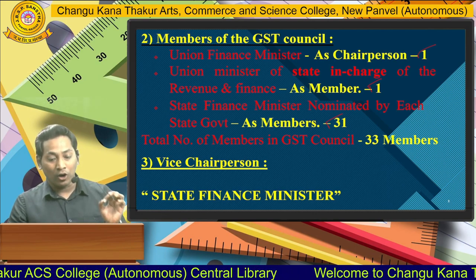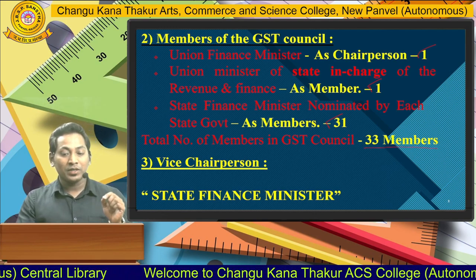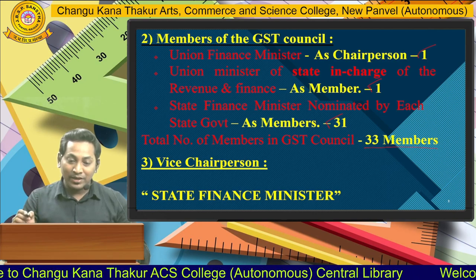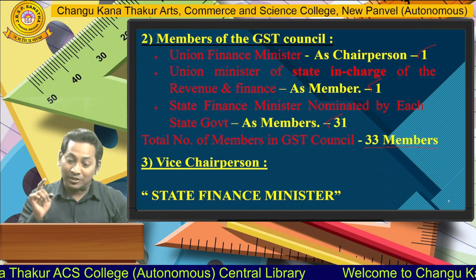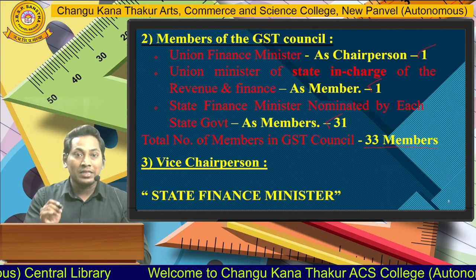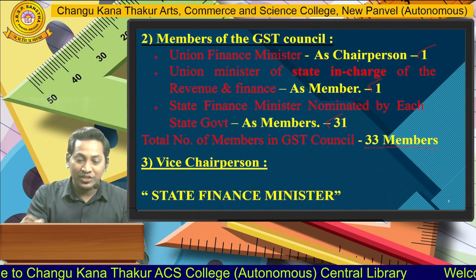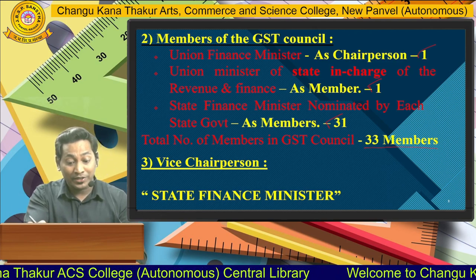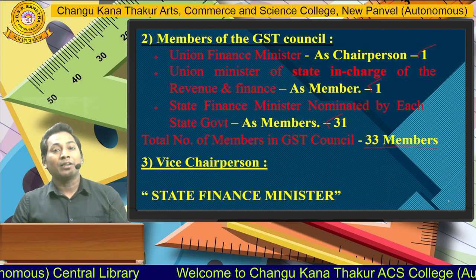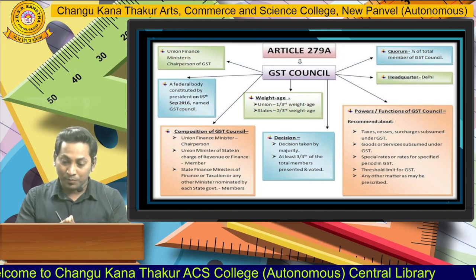The total number of GST Council members is 33. The members constitute three important aspects: Union Finance Minister as Chairperson, Union Minister of State in charge as member, and 31 State Finance Ministers from 31 different states. The Vice Chairperson of the GST Council is a State Finance Minister elected by all 31 State Finance Ministers among themselves.